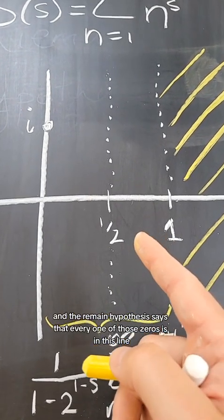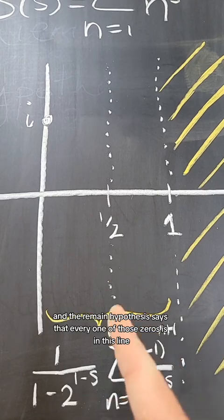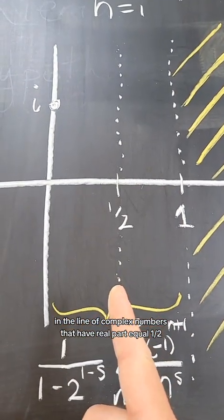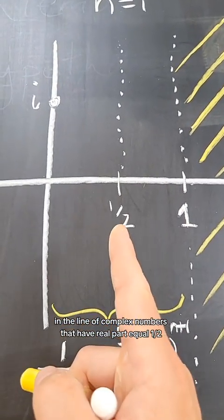And the Riemann hypothesis says that every one of those zeros is in this line, in the line of complex numbers that have real part equal one half.